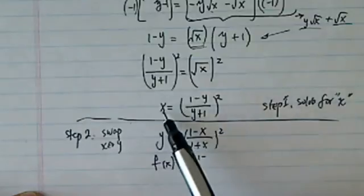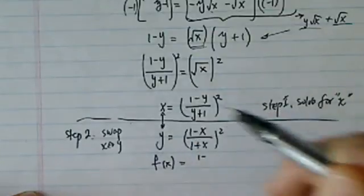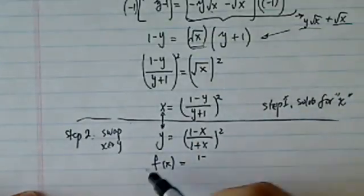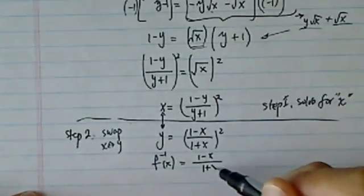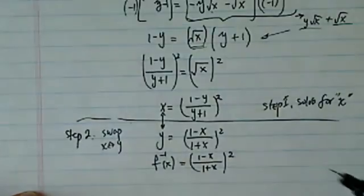So from here I have my x rewritten as y, my y is rewritten as x. Then my inverse function here is f⁻¹(x) = [(1 - x)/(1 + x)]², the whole thing squared.